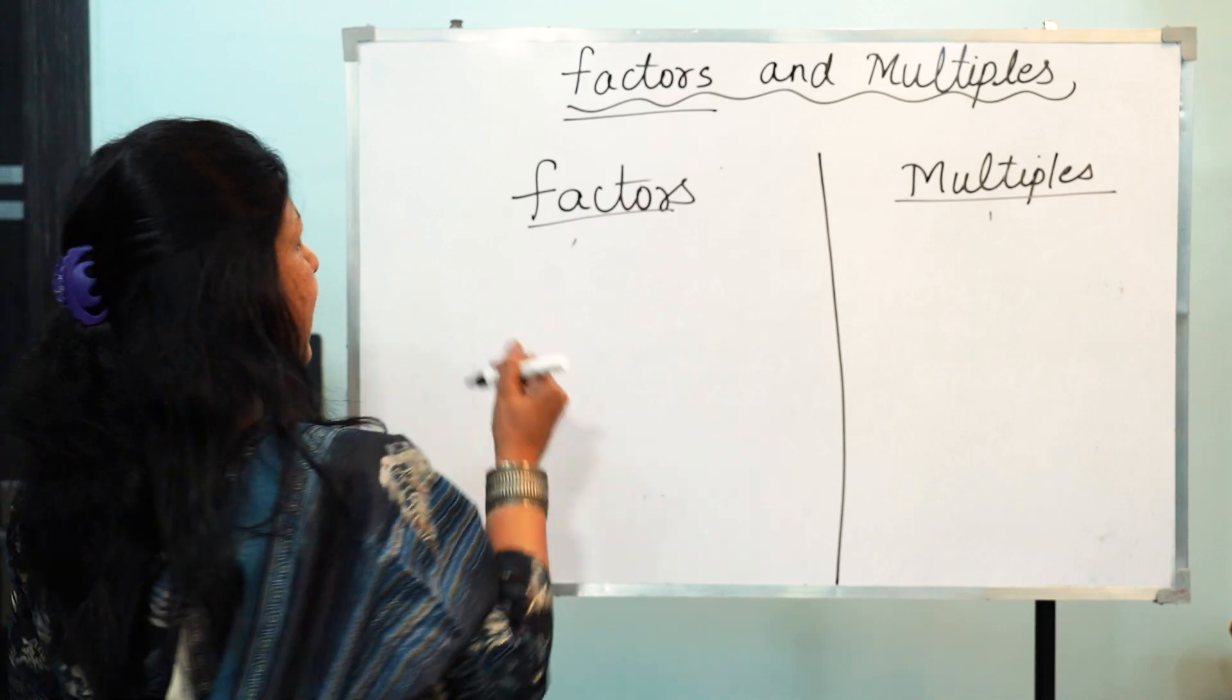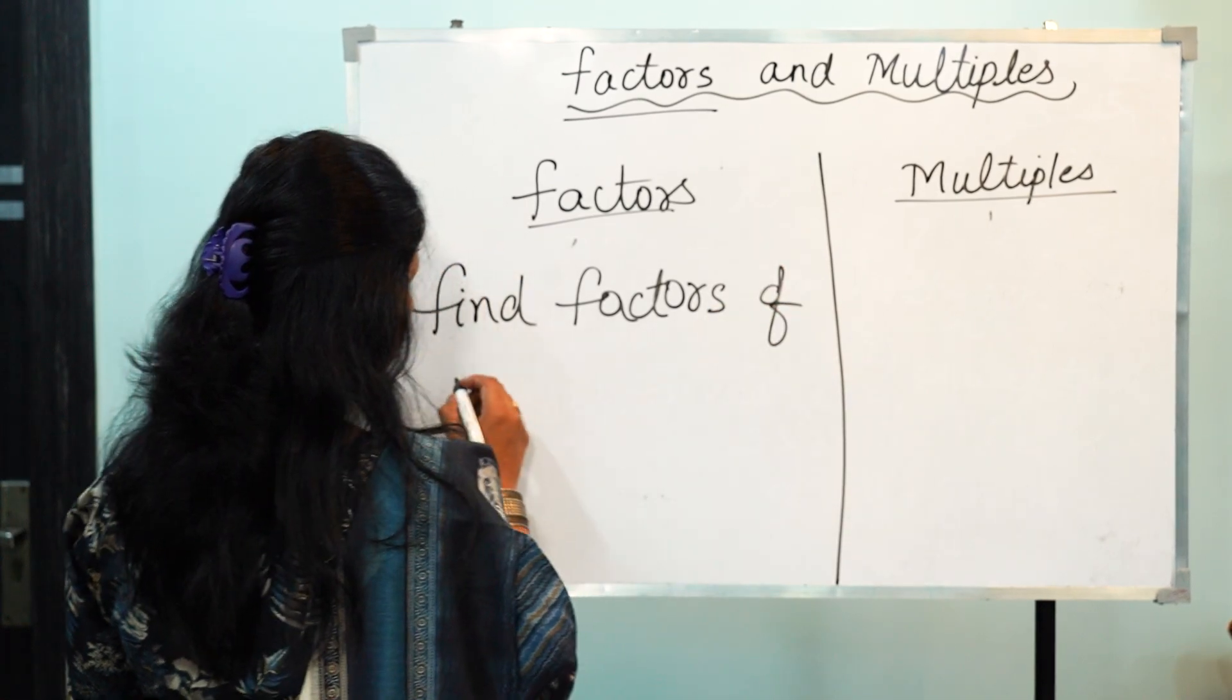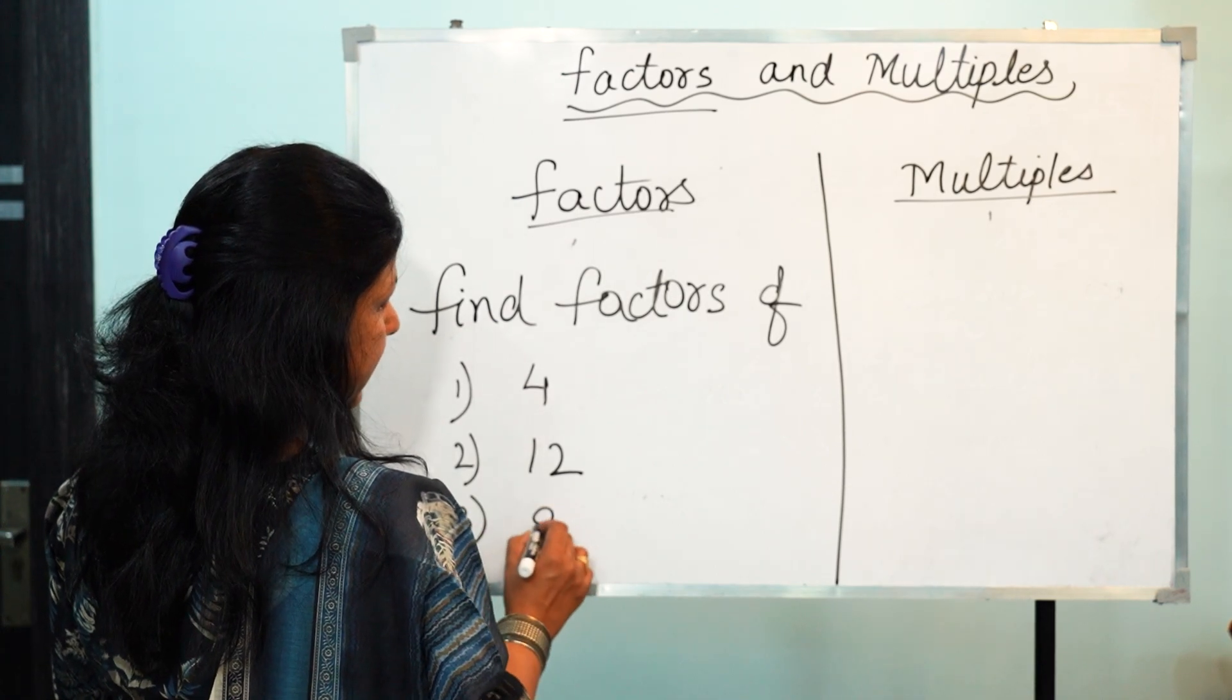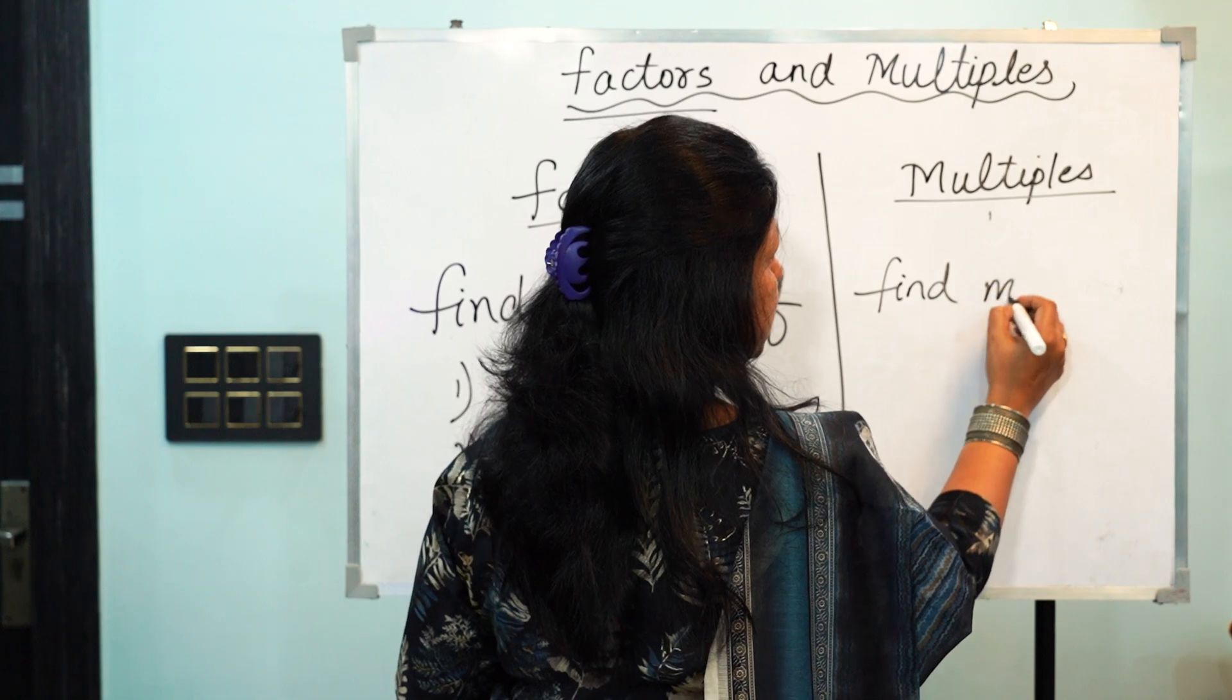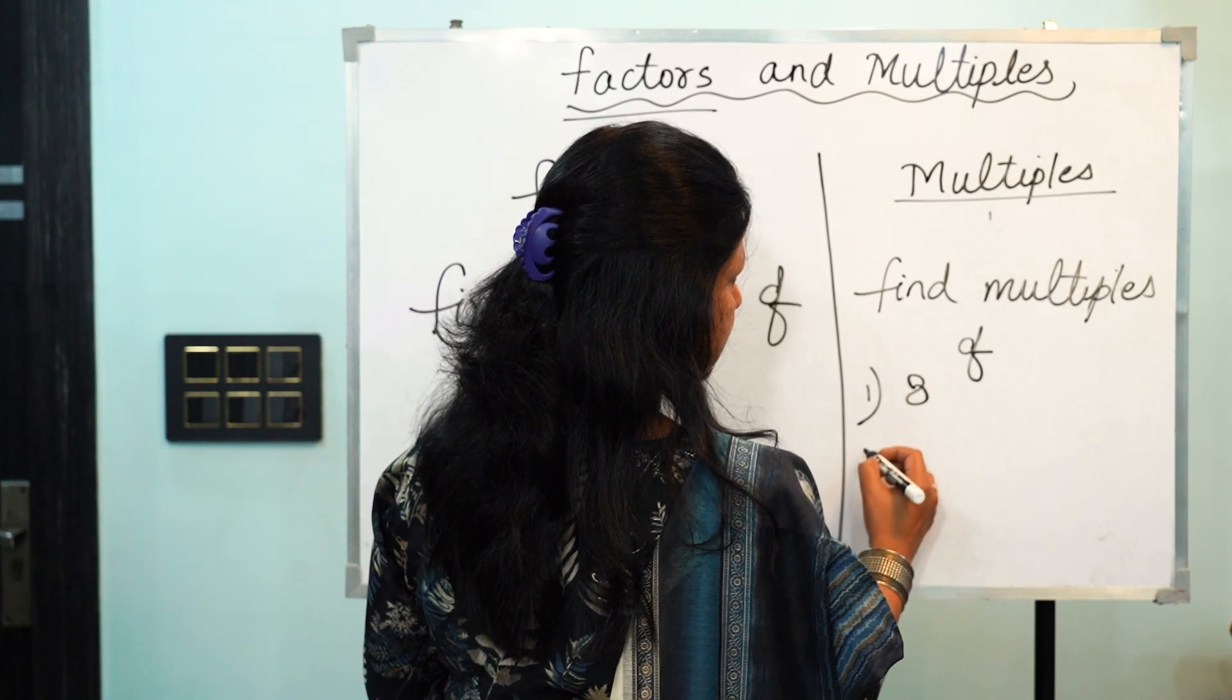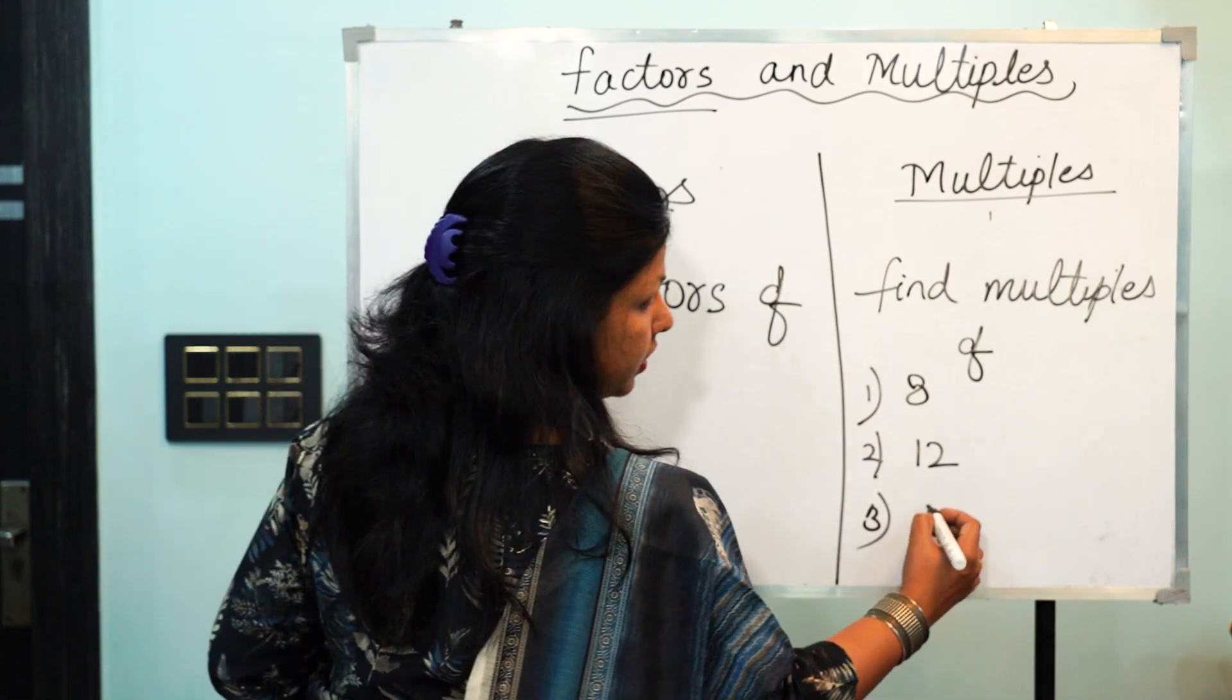And then I hope you will never forget this. So find out the factors of 4, 12 and 9. And here your homework is find the multiples of 8, 12, and let's give you an easy homework: 5.